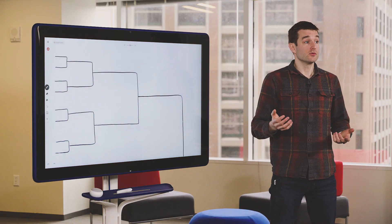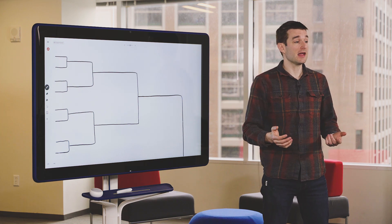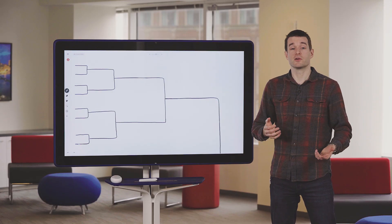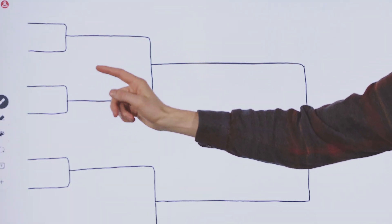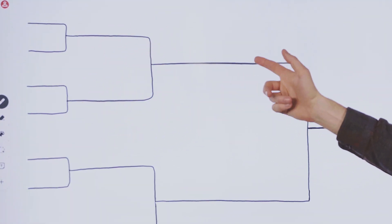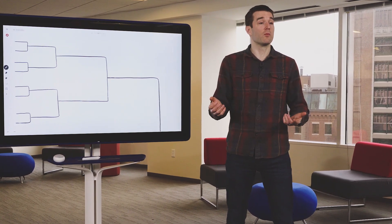A naive approach would be to walk through the tournament and for each pair of games, use the model to predict the most likely winner. Repeat that process for each round of the tournament, and at the end you'll have a tournament winner. But this approach has two limitations: you can't use it to figure out the odds that your favorite team will win, and it can't handle weird situations. For example, in round two, if your model was slightly wrong in round one, you'll be looking at the wrong pair of teams.